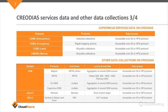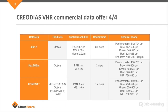What other data collections can you find on Criodias? You can find digital elevation models — we have four different digital elevation models available, accessible through S3 or NFS protocol on the Criodias cloud. We also have data from JASON-3, which are altimetry data. We have S2GLC — Sentinel-2 Global Land Cover — which is the classification of Sentinel-2 data. To fill some gaps and meet user needs, we also offer the possibility to use very high resolution commercial data.